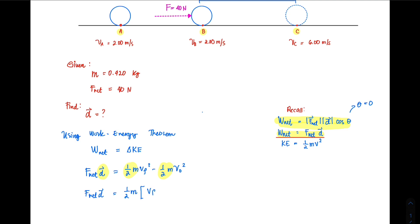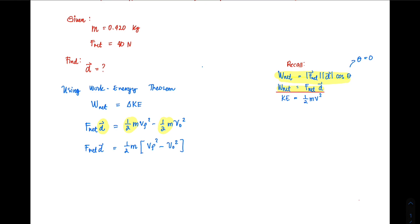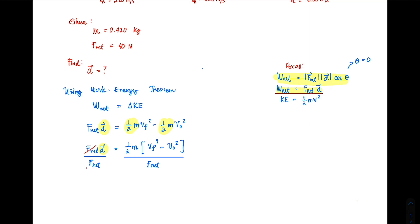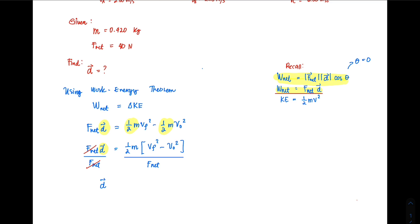Since we are just looking for the displacement d, I am going to find all means - even if that means is at the end of the world - to isolate my displacement d. That means I have to multiply both sides by 1 over F_net, or simply divide by F_net.